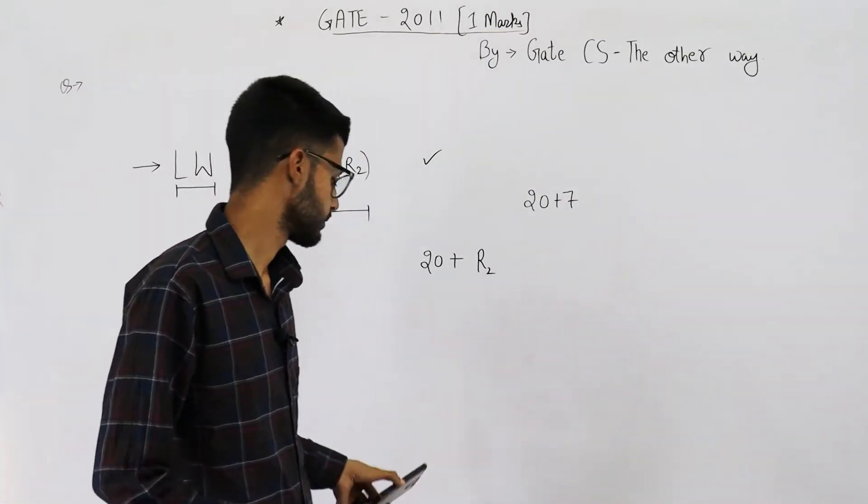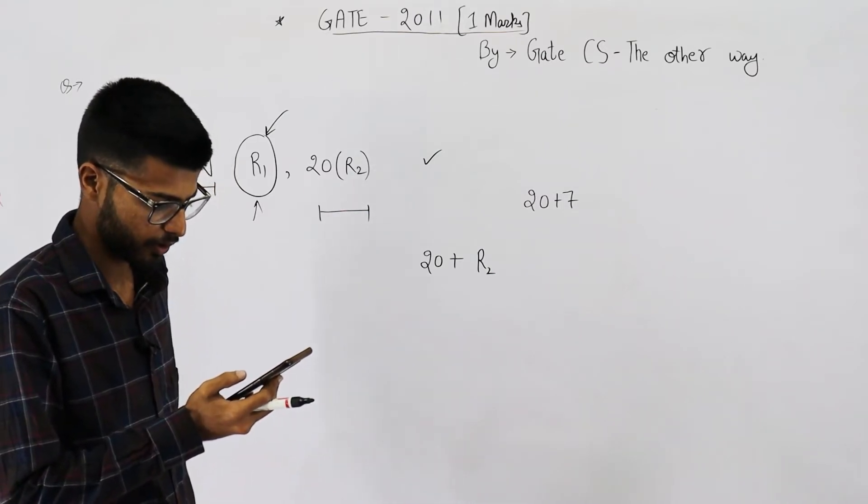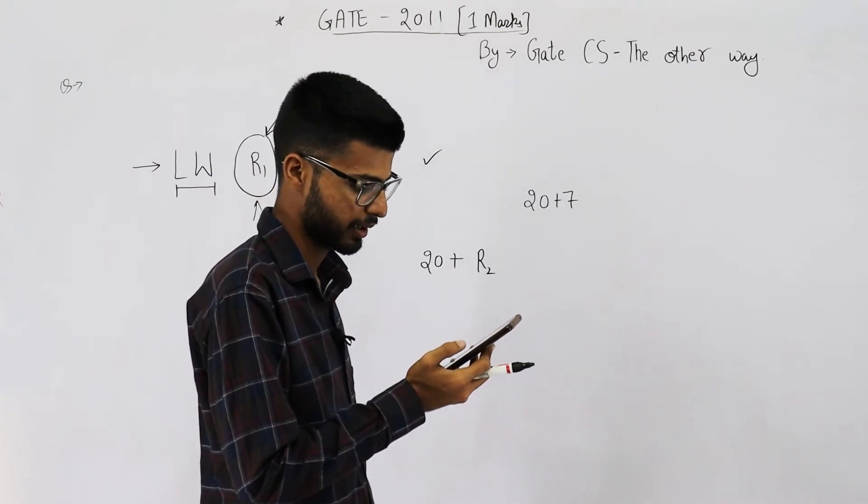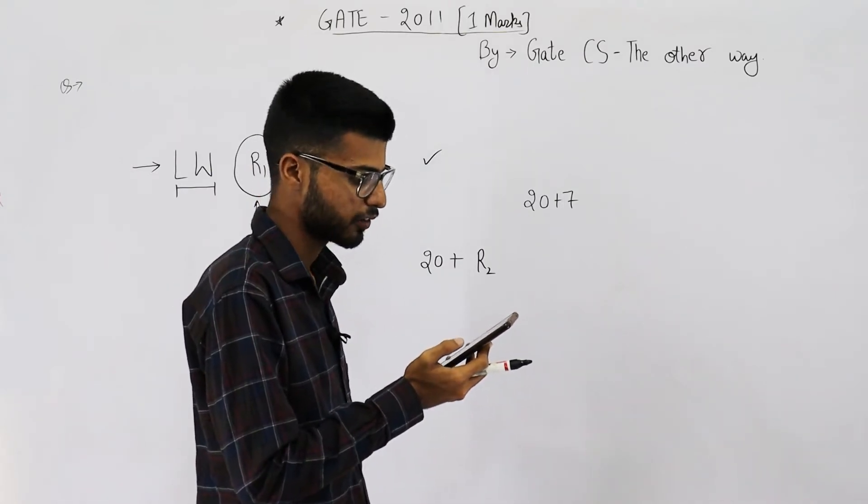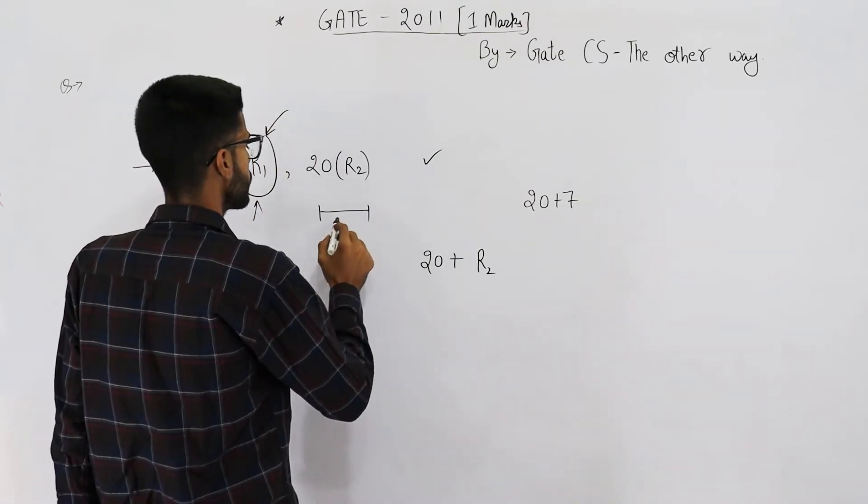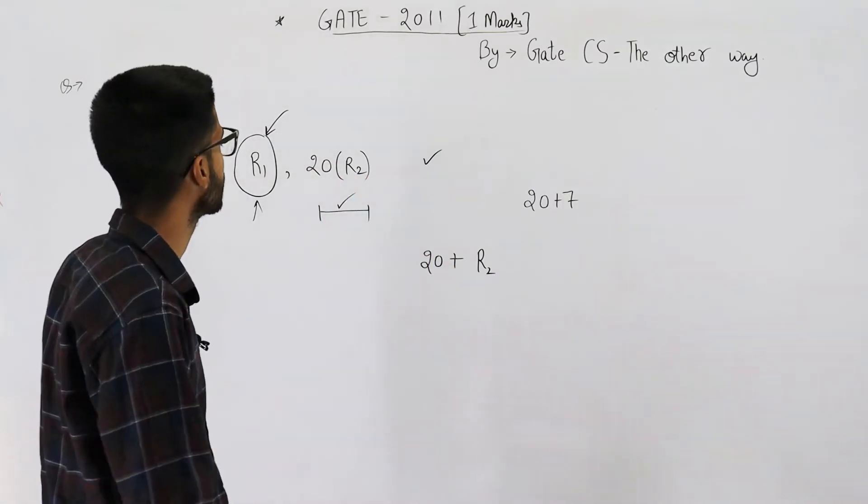Now let's read the statement. Which of the following best reflects the addressing mode implemented by this instruction for the operand in memory? That means we need to find the addressing mode used by this operand. This operand is taken from memory.